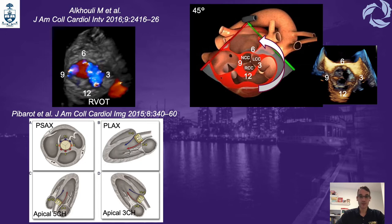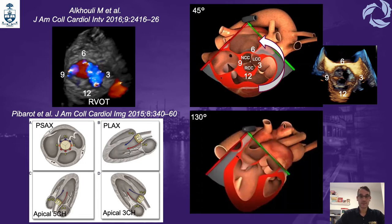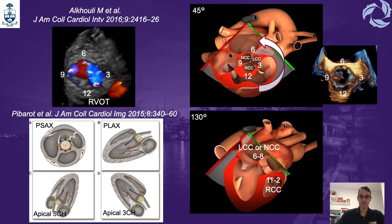When we do it from the aortic valve long axis view at 130 degrees, equivalent to the parasternal long axis view by transthoracic echo, the 6 to 8 o'clock positions will be situated on top and from 11 to 2 at the bottom of the aortic valve.